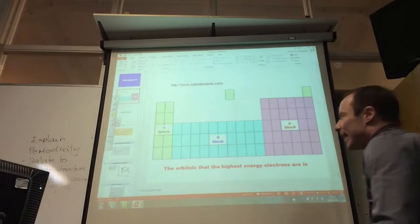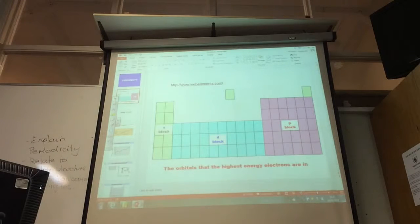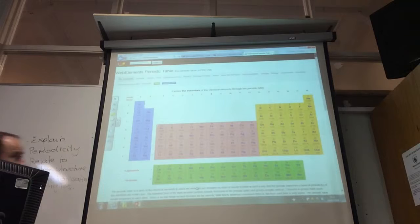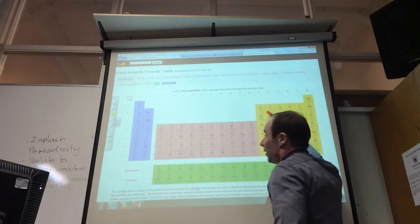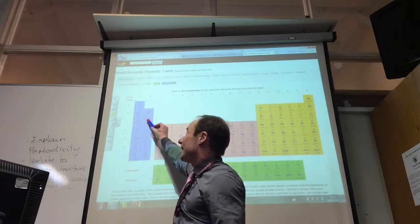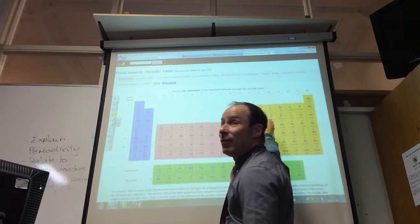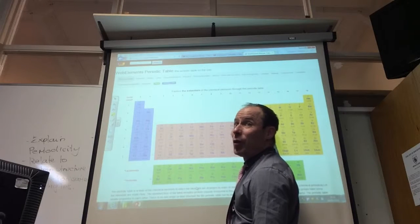So, for some reason, AQA want us to look across period 3. So, let's bring back our periodic table again. This is period 3, going along here. Do you notice that these, as I go across, sodium, magnesium, and aluminium, they're all metals. So, they would all lose electrons to form positive ions.